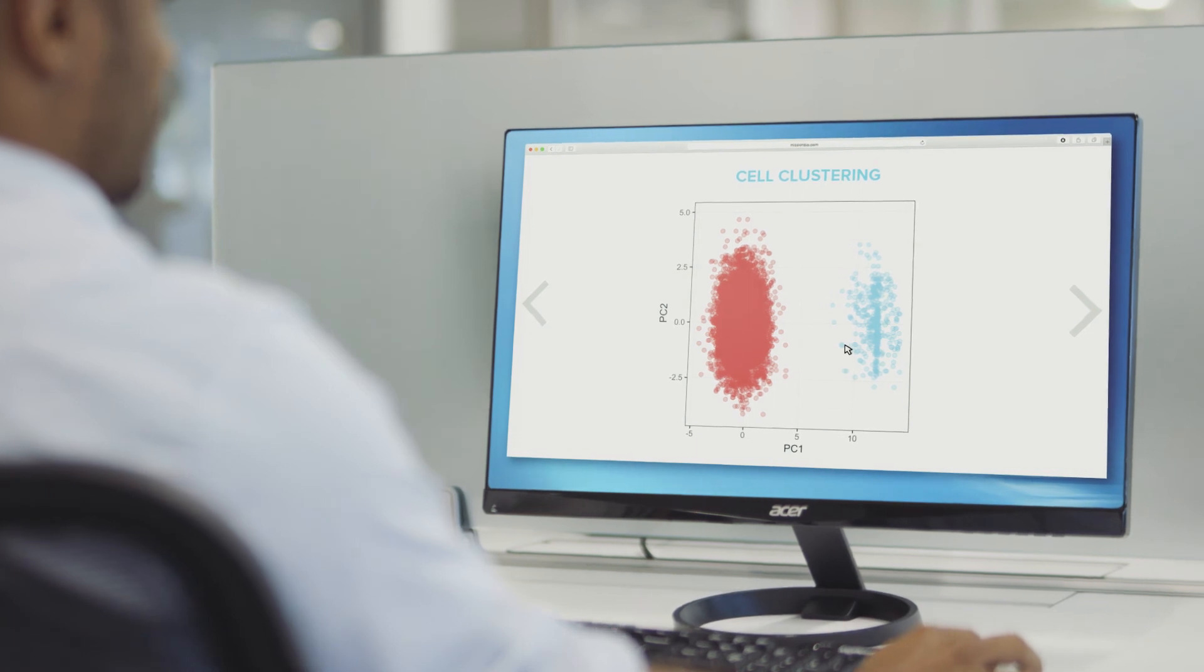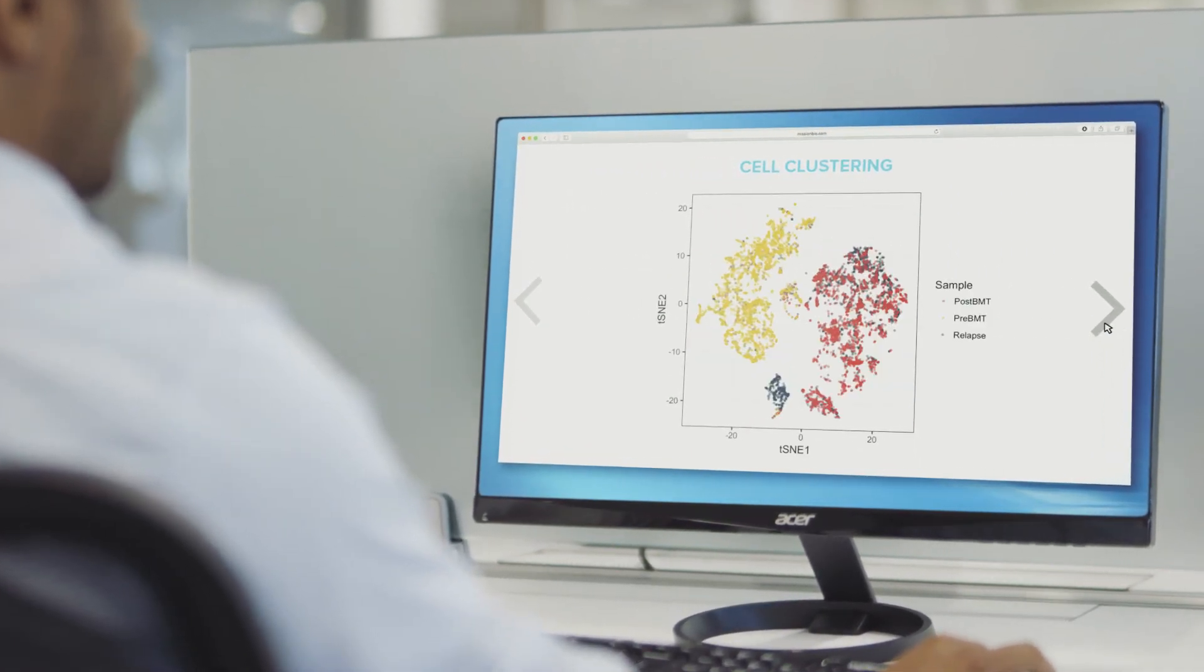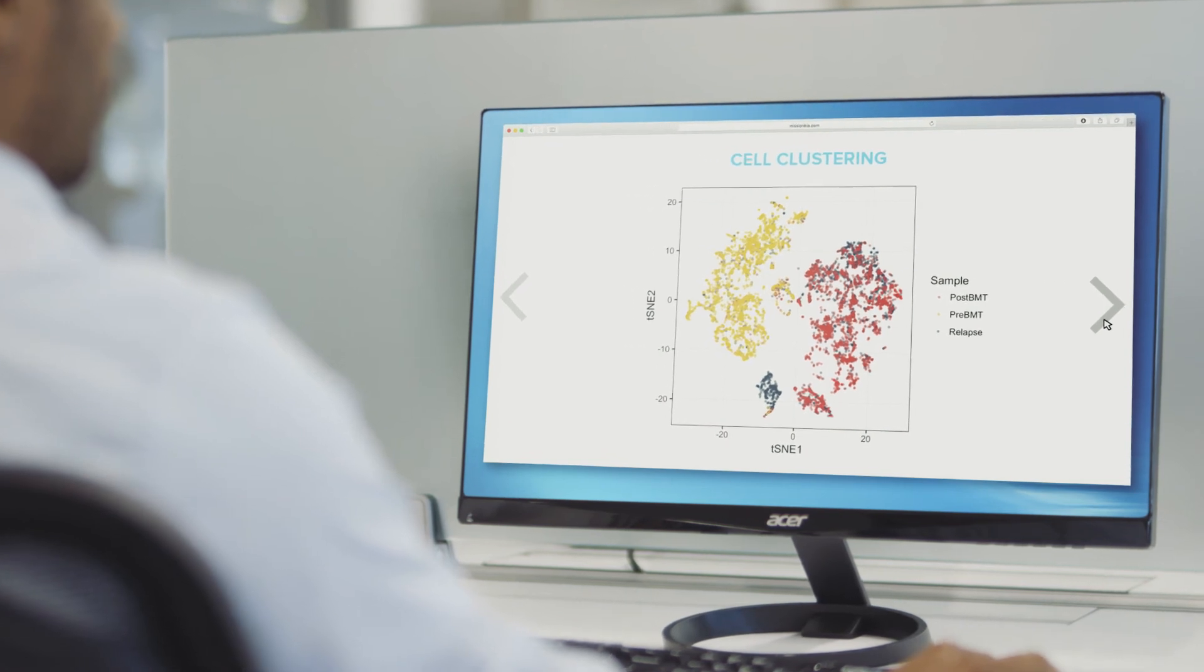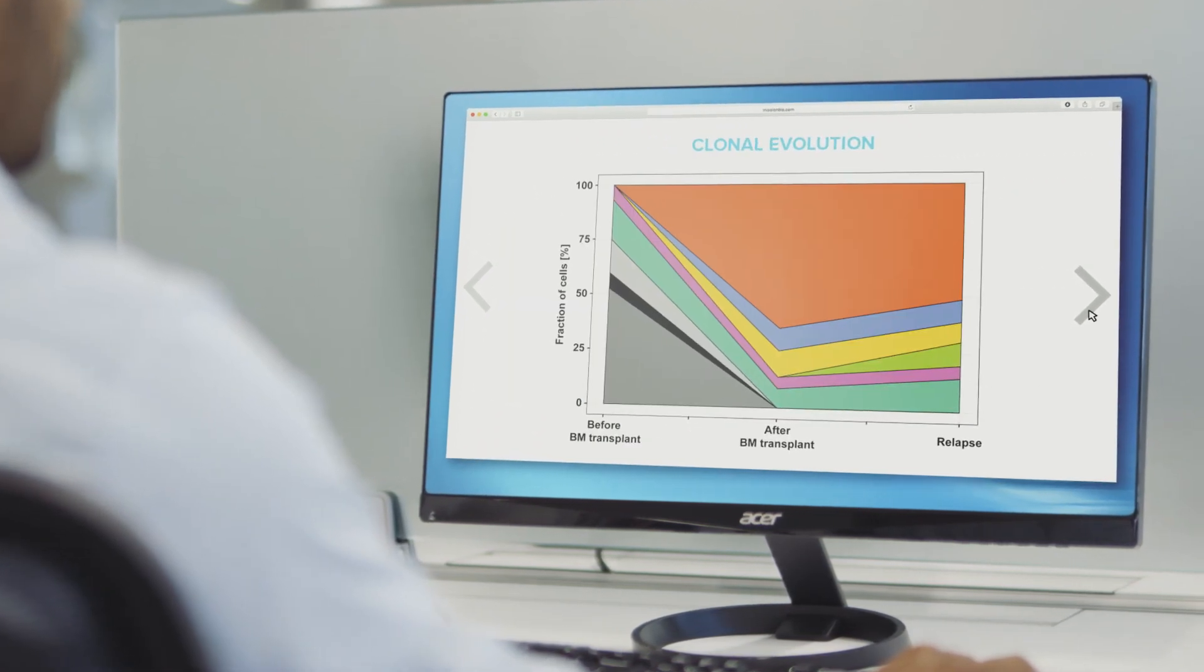With direct identification of subclonal populations and their mutational profiles, you can now measure single cell variant allele frequencies, mutation co-occurrence patterns, and see how clonality changes over time.